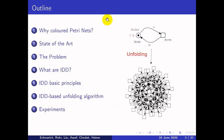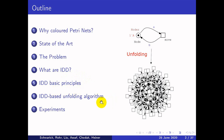The outline of my talk includes: first, I will explain why colored Petri nets are a powerful modeling approach. After that, I will speak about the state-of-the-art and introduce the problem. Then I will introduce IDD, or interval decision diagrams, as a solution, covering their basic principles, our unfolding algorithm, our experimental results, and future work.